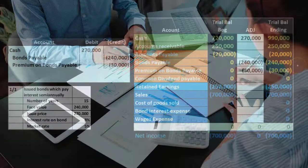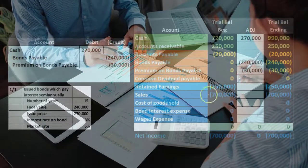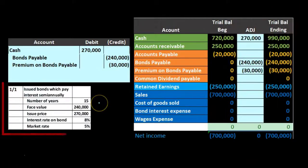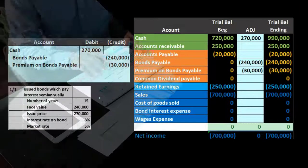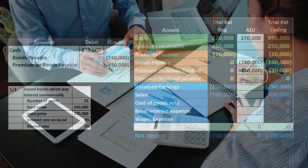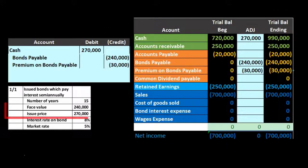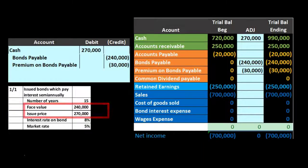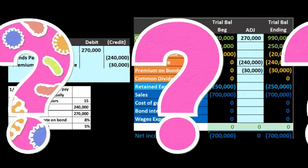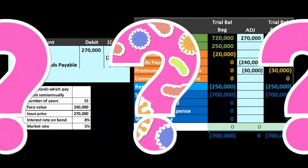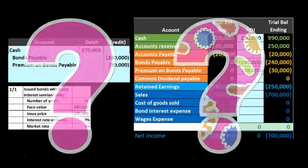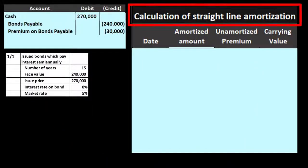We'll go through recording interest on these 15-year bonds, paid semi-annually, so we'll record interest and also reduce this premium over time. Remember, at the end of the bond's life we're not going to pay back 270 — we're only going to pay back 240. So we need to eliminate that premium on the bond as we go.